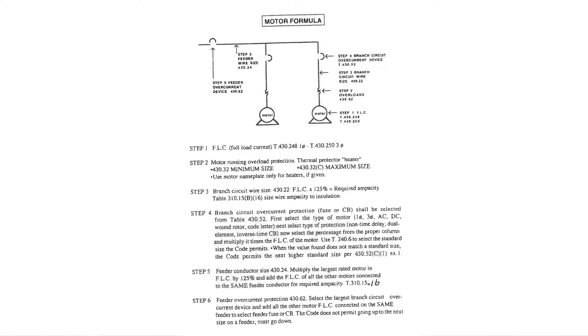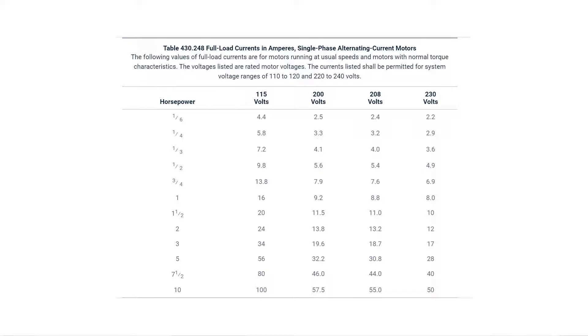These tables are just a quick reference. Now let's look at our 6-step motor formula. Let's look at step number 1. Step number 1 says full-load current, and it tells you the tables we're dealing with is table 430.248 for single-phase, 430.250 for three-phase. Now to understand those tables, let's look at that 430.248. Let's read through the title block and then the actual information. It says full-load currents in amps, single-phase, alternating current motors. The following values of full-load current are for motors running at usual speeds and motors with normal torque characteristics. The voltages listed are rated motor voltages. The currents listed shall be permitted for system voltage ranges of 110 to 120. See in the middle there, it's got 115 on the table. And then 220 to 240. See in the middle there, you've got 230.